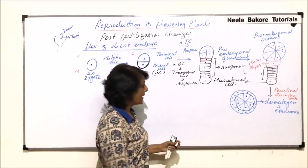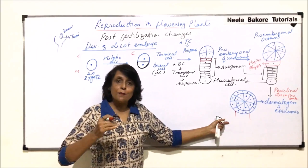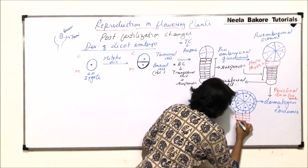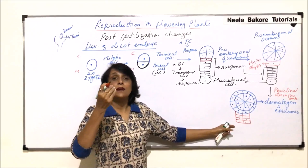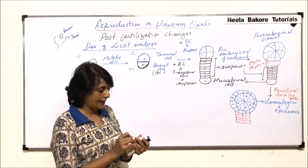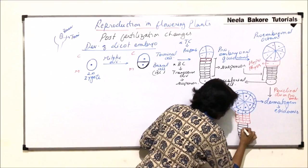The next change is in the hypophysis. The hypophysis divides again, resulting in the formation of eight cells. These eight cells are again in the form of a mass, but we draw them as two, four, six, and eight so we can see all eight cells since their fate is different. The suspensor is still present, along with the haustorial cell.